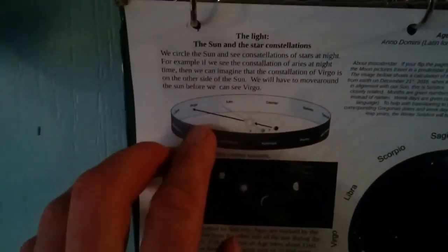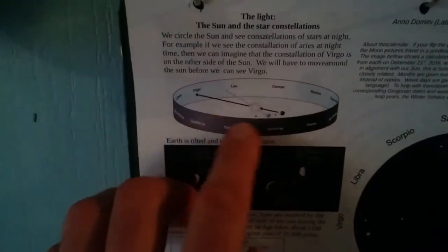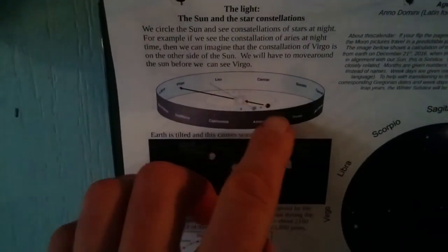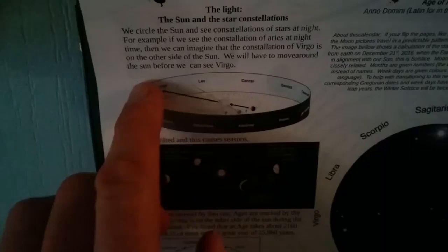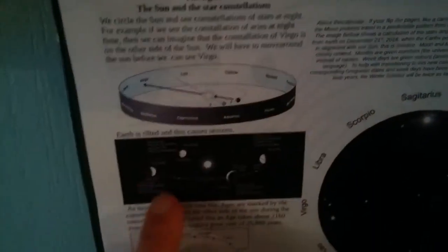It talks about how the Earth goes around the Sun and we can see different constellations at different times of the year depending on where we are in our travel around the Sun.